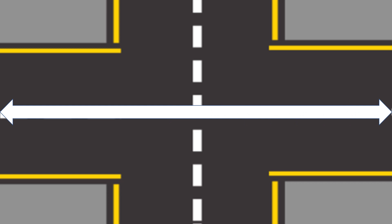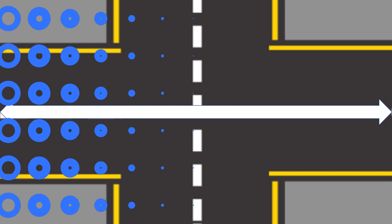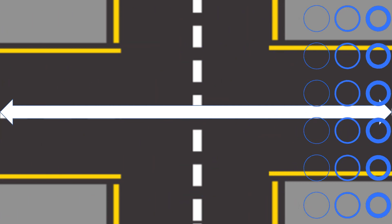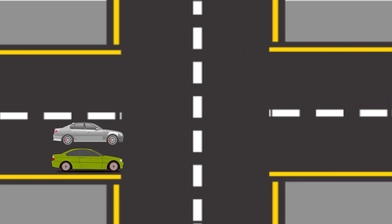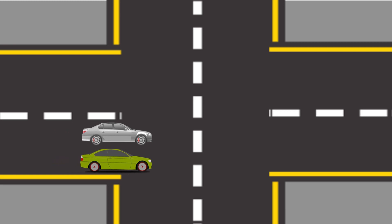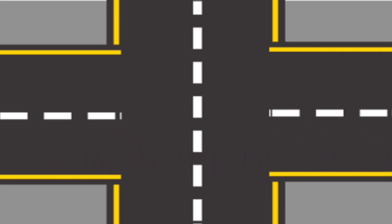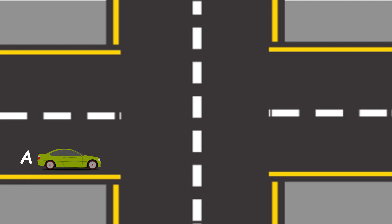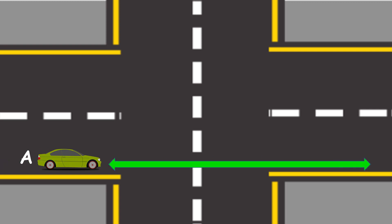This is a Line. When car A moves forward, the path it passes through represents a line, and also in car B.